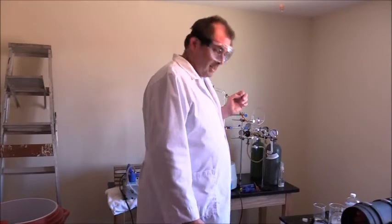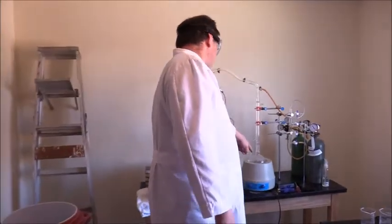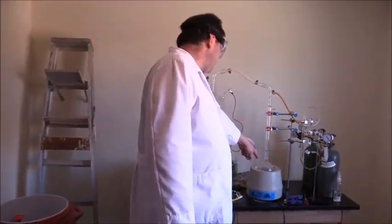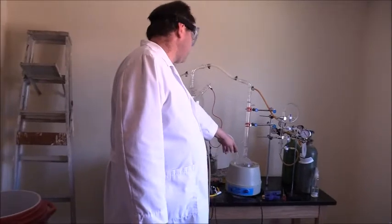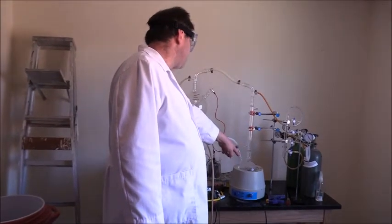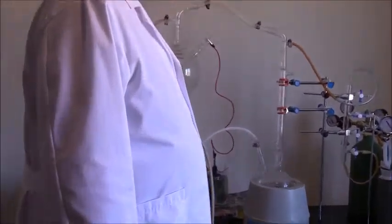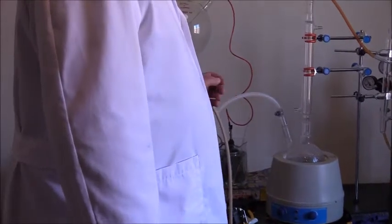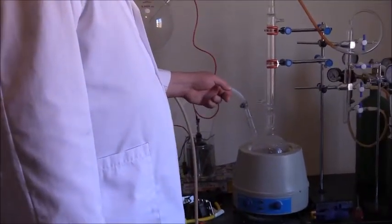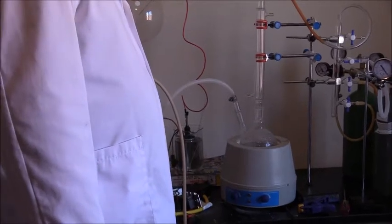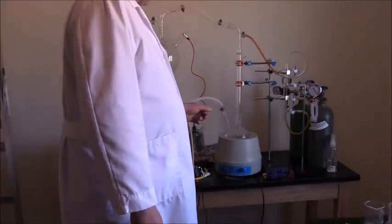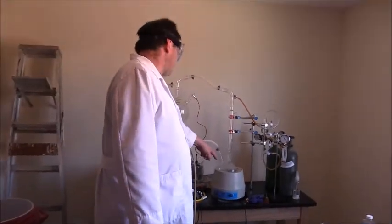I'm going to attempt the Miller-Urey experiment for the second time here. As you can see, I have my primordial ocean flask with 500 milliliters of distilled water, as well as 15 grams of sodium carbonate and 15 grams of potassium carbonate. I also added 10 grams of iron powder.